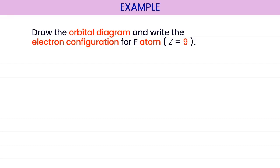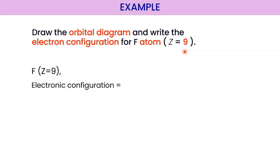Now let's check your comprehension. The question asks for the orbital diagram and electronic configurations for a fluorine atom, given proton number 9. Since it's a neutral atom, the number of electrons is the same as the proton number. It is easier to first write the SPDF notation. So we have 1s², 2s², and 2p⁵ to accommodate all 9 electrons in the fluorine atom.